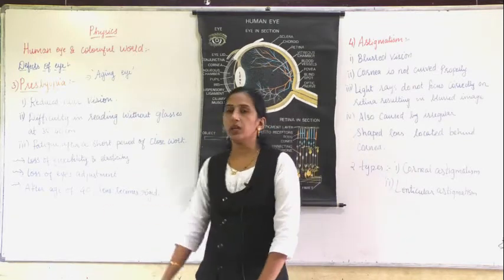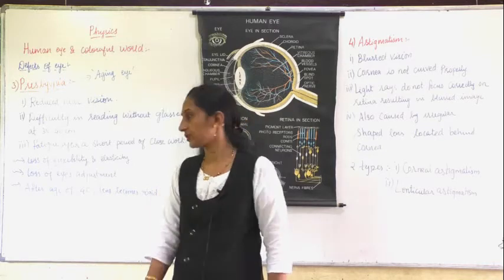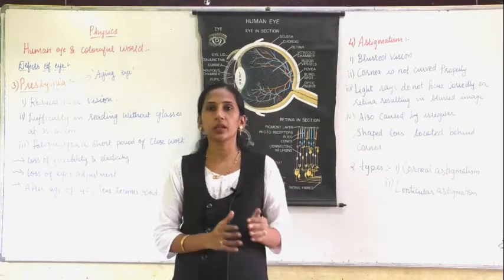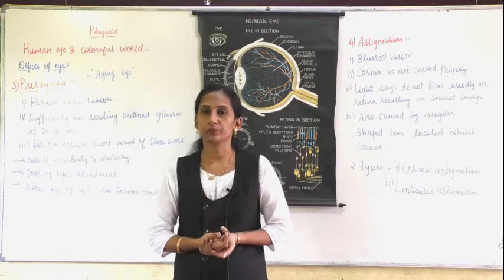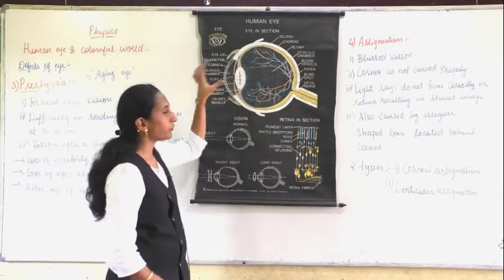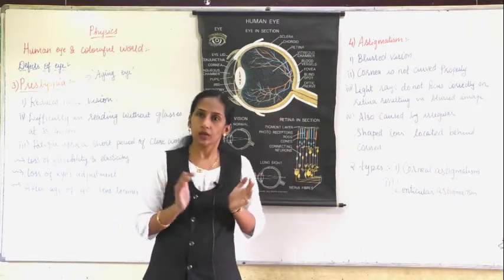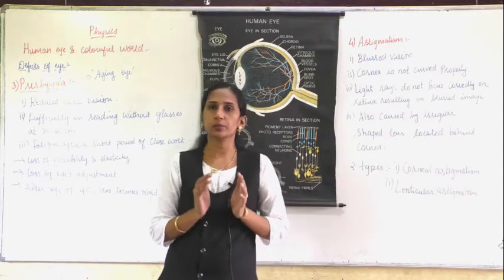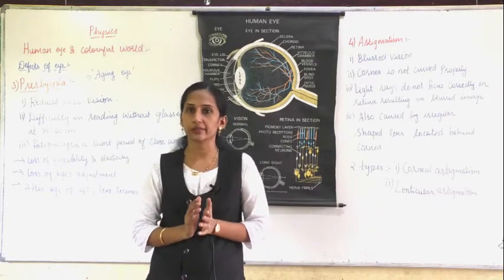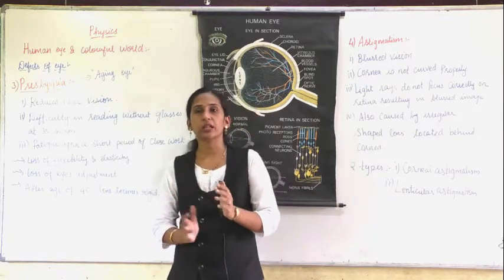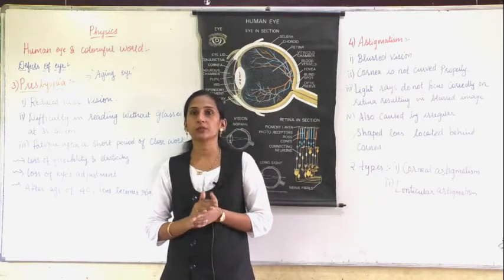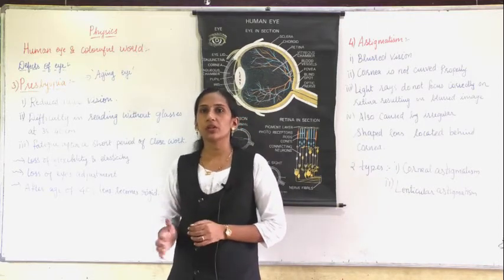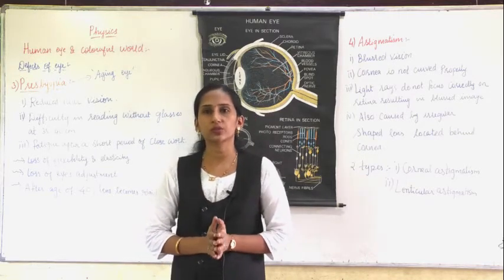The cause of presbyopia is the loss of flexibility and elasticity of the lens. In young persons, the eye lens is very soft and elastic. This elasticity allows the lens to change its shape and adjust its focal length to focus light rays properly. This good elasticity is found in young people's eyes, but as a person grows older, the eye loses its elasticity and flexibility, resulting in presbyopia.